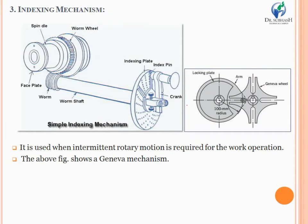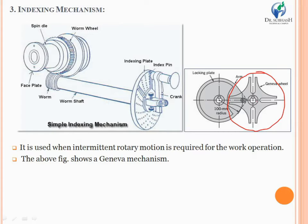The third kind of special mechanism is the indexing mechanism, which you may have already studied in manufacturing subjects. It is generally used whenever intermittent rotary motion is required for a work operation. This mechanism is also known as the Geneva mechanism, which consists of a driving wheel and a pin that engages in a slot on the driven member. It contains two basic parts: the locking plate and the Geneva wheel, which has four equal angular slots cut on its outer periphery.